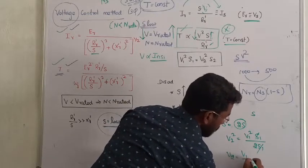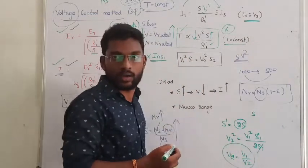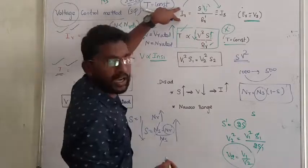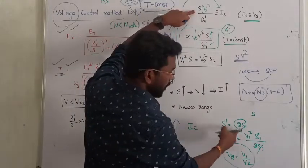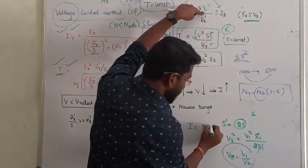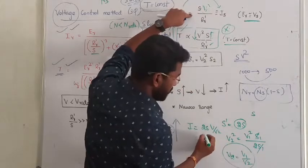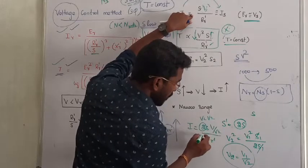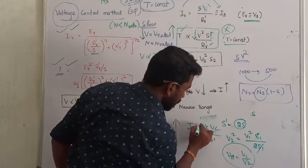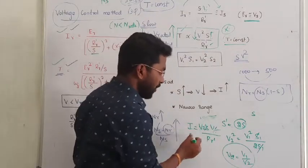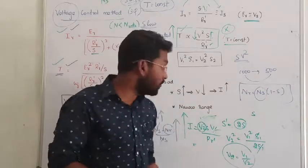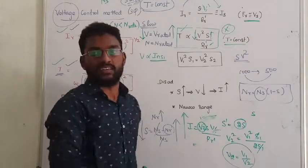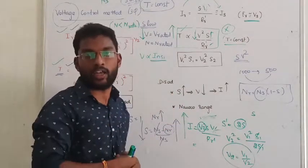So when slip doubles, voltage reduces by √2 times. Now looking at the current equation: if slip doubles and voltage reduces by √2, then rotor current becomes: I ∝ S·V/R' = 2S·(V1/√2)/R' = (√2·S·V1)/R'. So the current value is √2 times the original current — the current value is drastically increased, which may damage the winding.